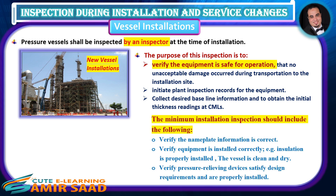The minimum installation inspection should include the following: verify the nameplate information is correct; verify equipment is installed correctly — for example, insulation is properly installed and the vessel is clean and dry; and verify pressure-relieving devices satisfy design requirements and are properly installed.